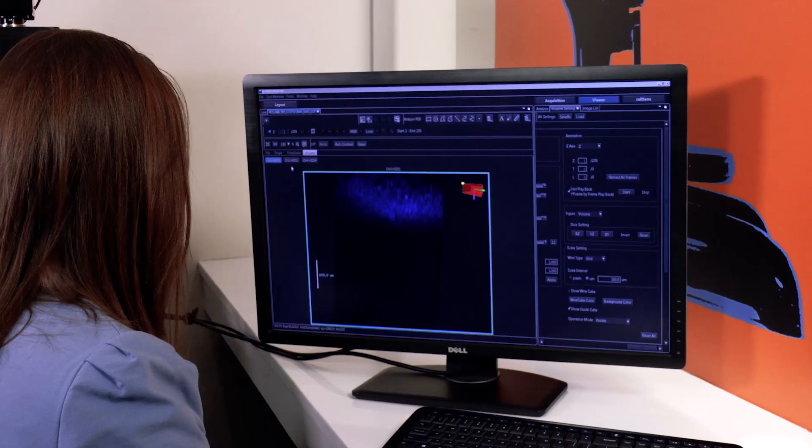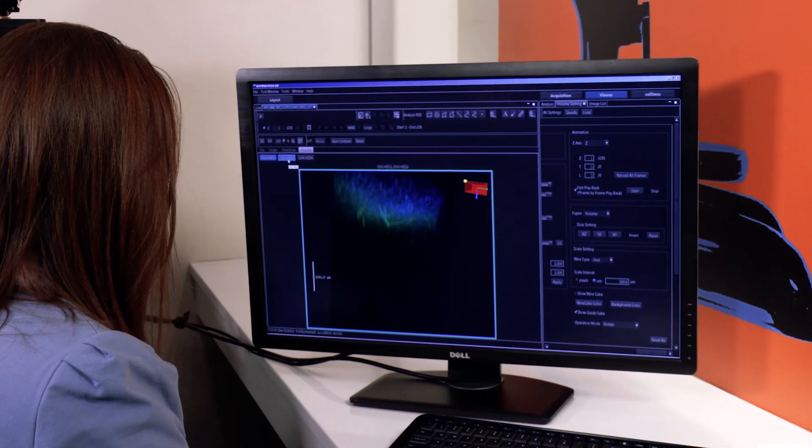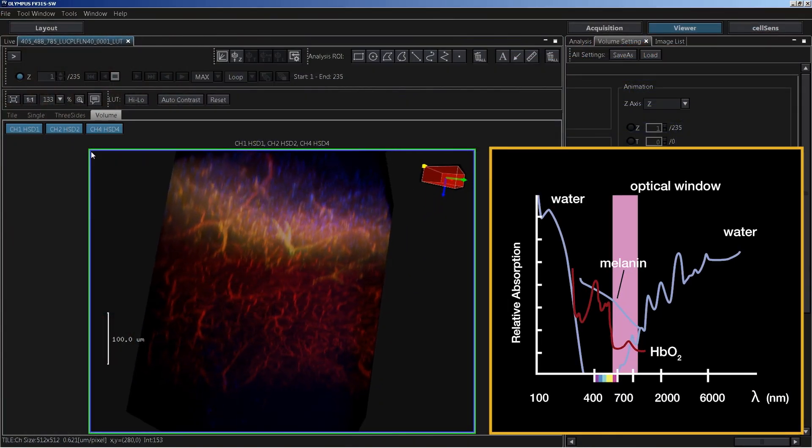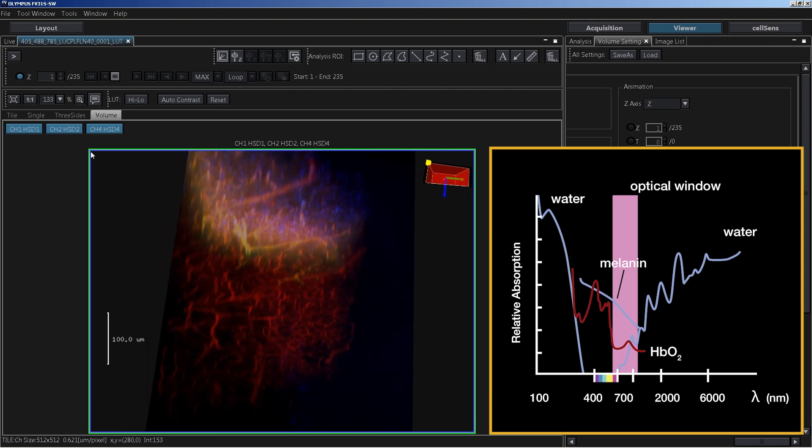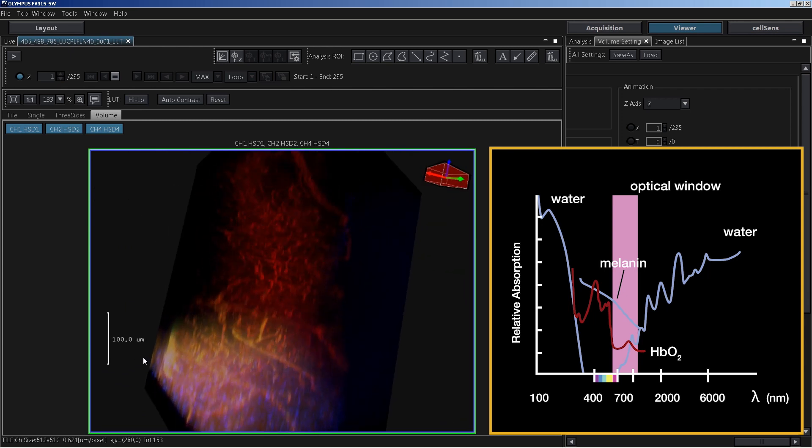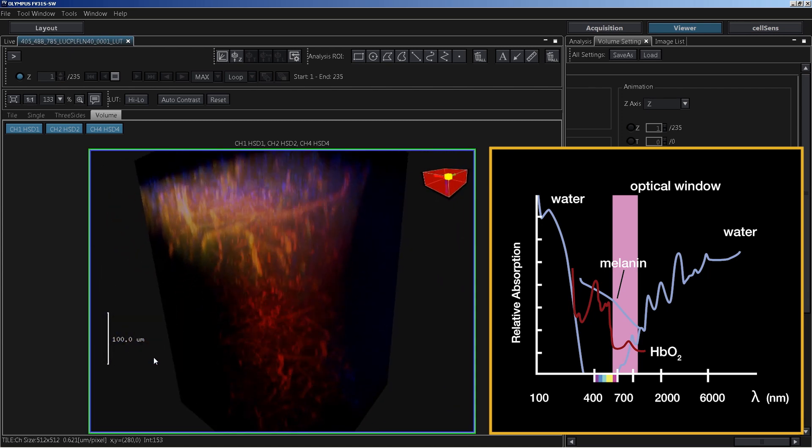Finally, the system lets you image much deeper into your sample. Near-infrared excitation light enables deeper imaging with less scattering and absorption for significantly greater penetration than what you can achieve with a visible wavelength laser. Deeper imaging means you can collect much more data just by switching to a longer wavelength.